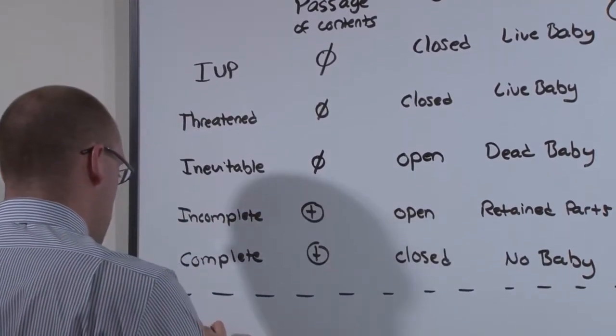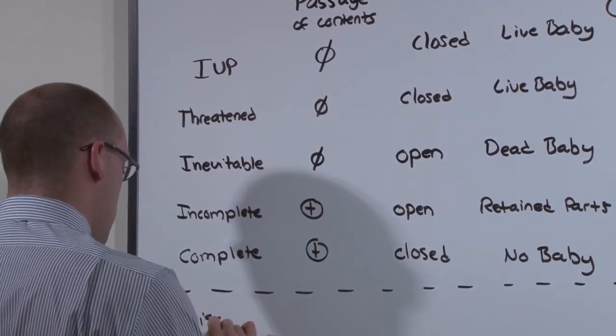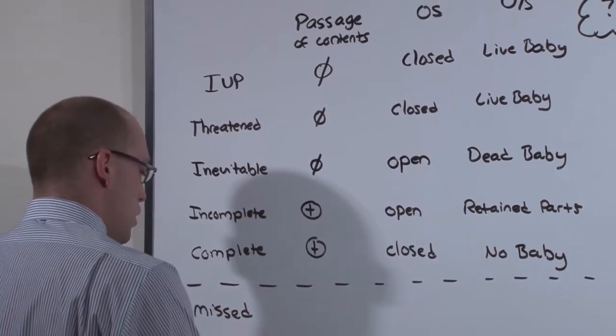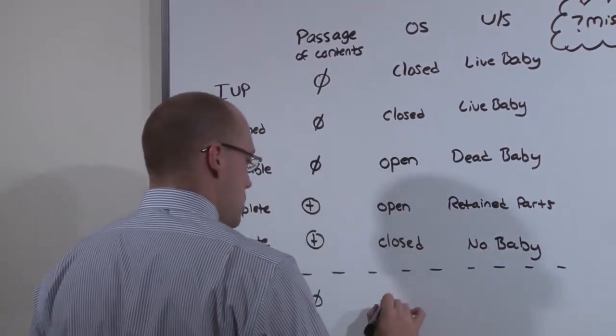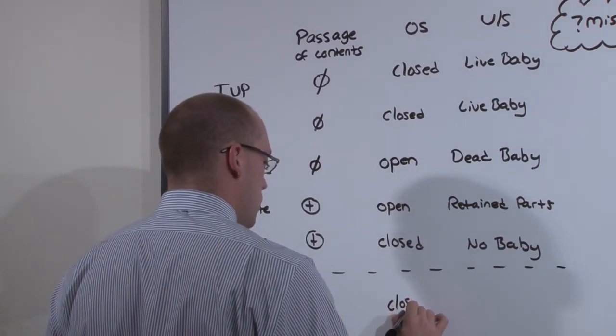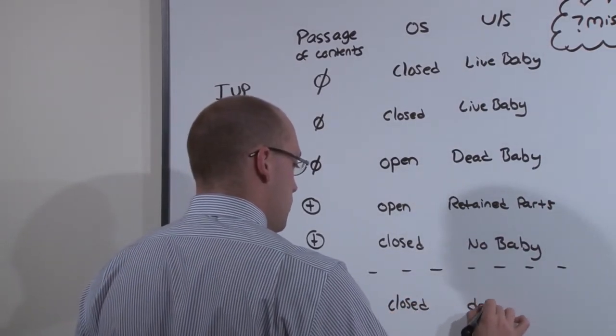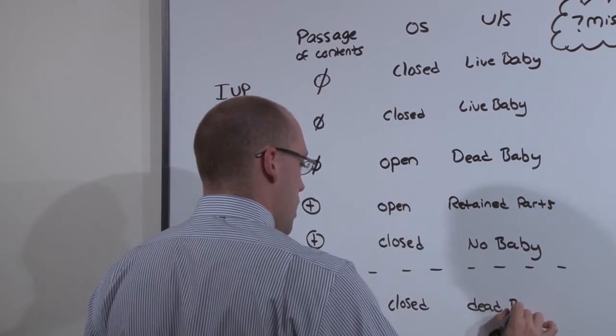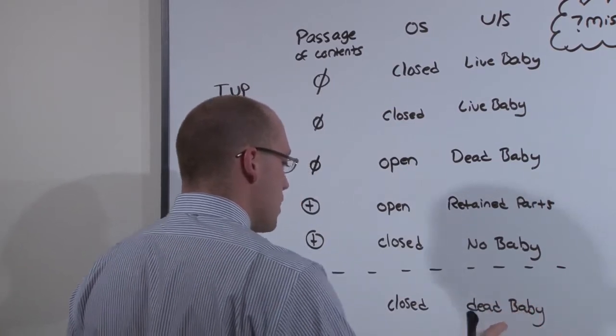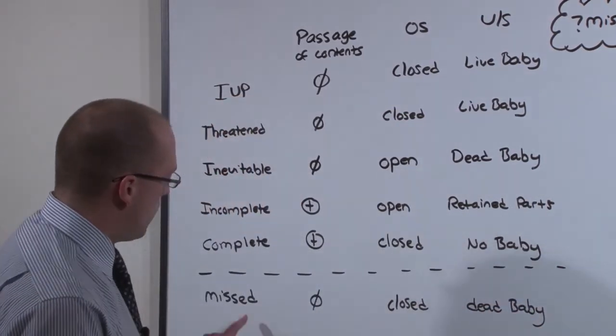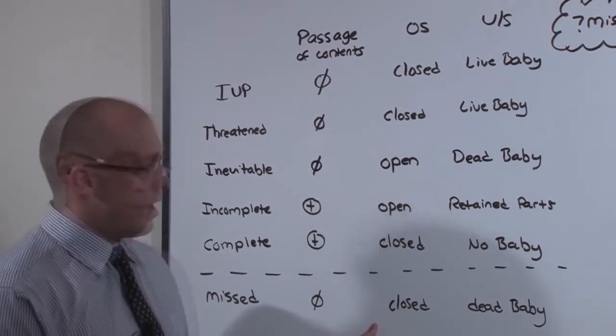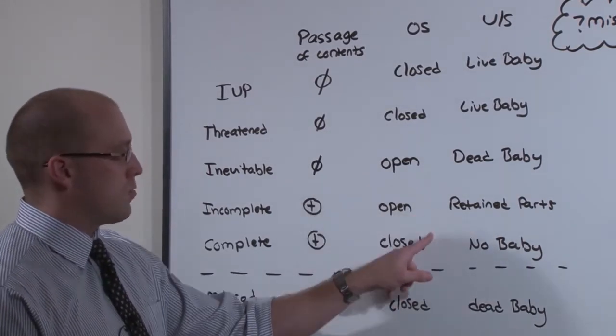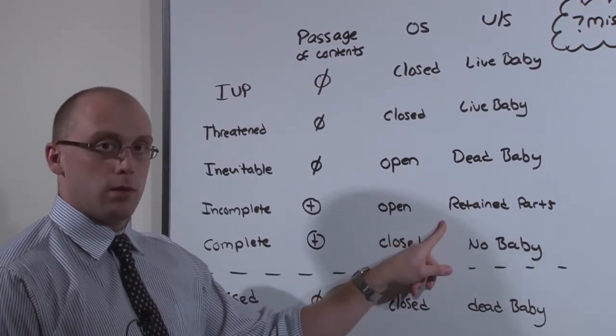Since it doesn't fit with my natural progression, a missed abortion will have no passage of contents. The os will be closed, yet there's a dead baby inside. Mom hasn't yet realized baby needs to come out. If you find a missed abortion, you'll need to do a suction curettage or dilation and curettage. And if there are any retained parts after the os closes, you may have to go in and remove those as well.